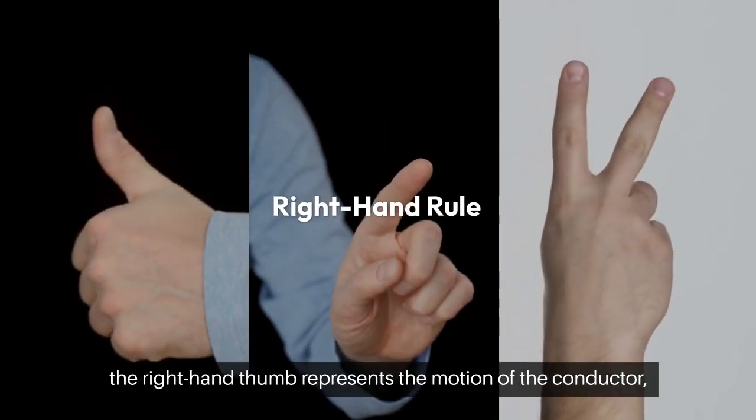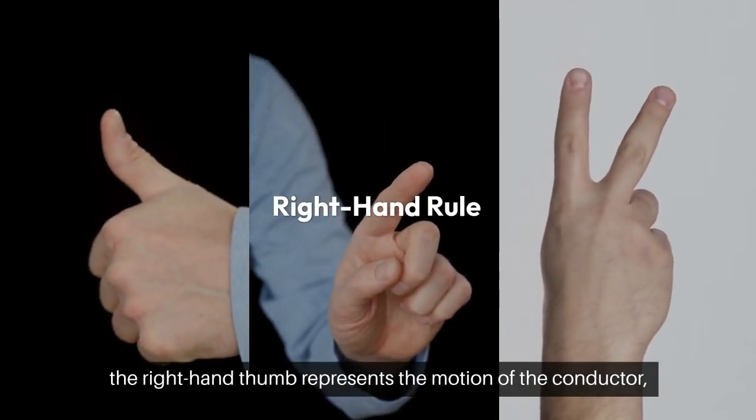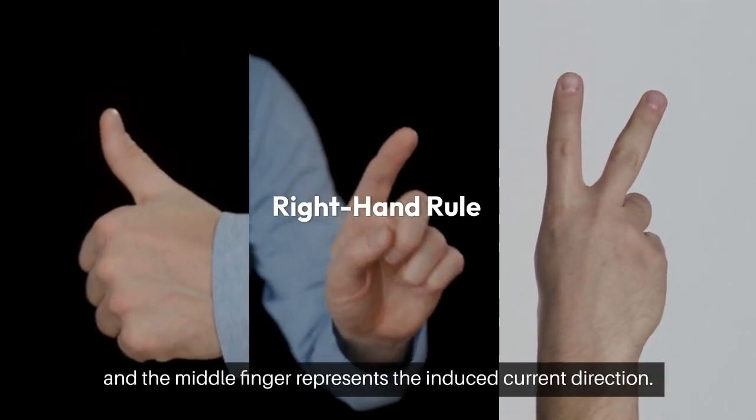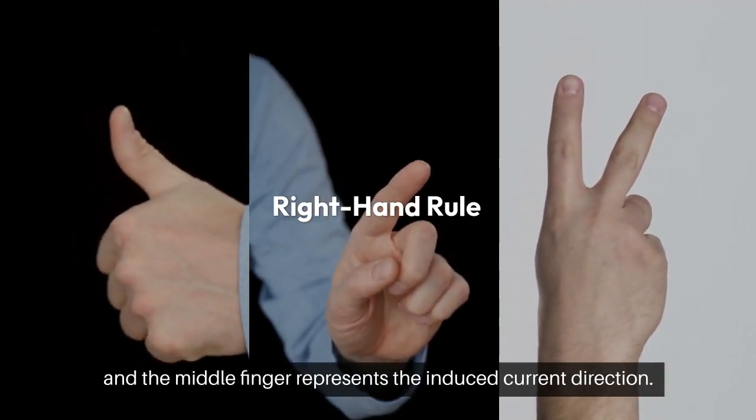In this rule, the right-hand thumb represents the motion of the conductor, the forefinger represents the magnetic field direction, and the middle finger represents the induced current direction.